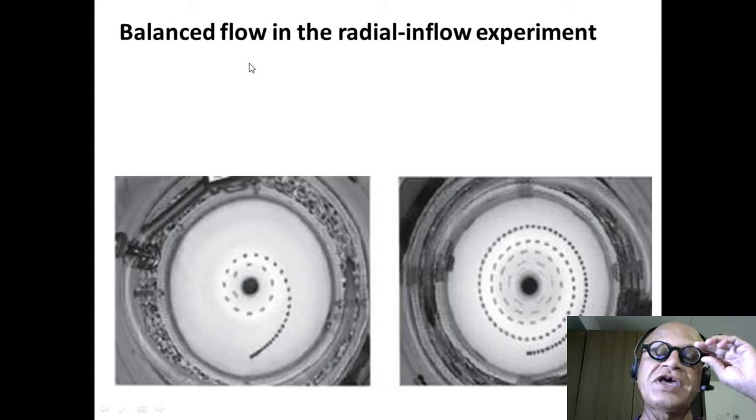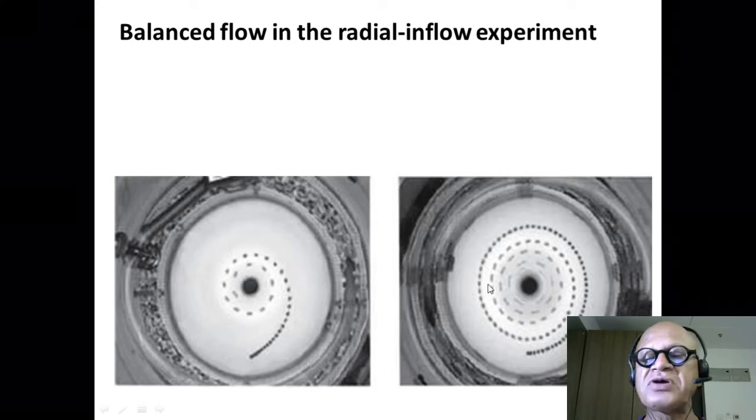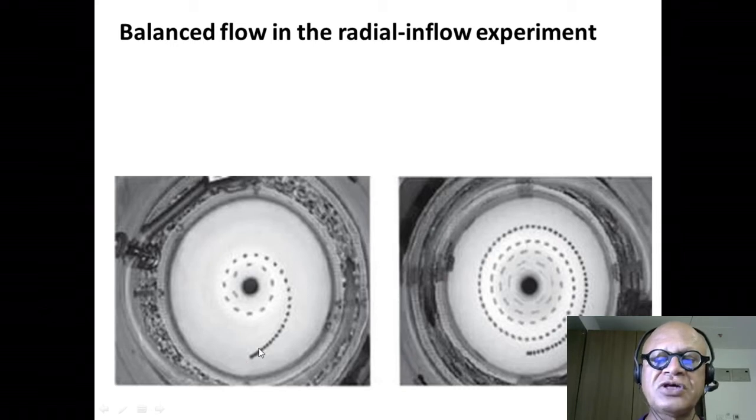So let's look at balanced flow in the radial inflow experiment. You remember this one? We were rotating here at 5 RPM. At 10 RPM here, we had paper dots to track the flow being pictured at every 1/30th second.